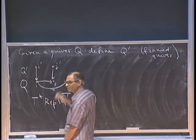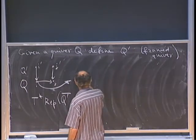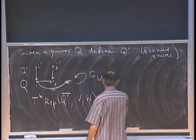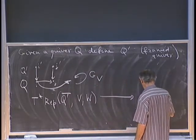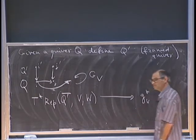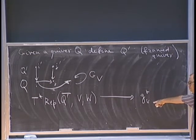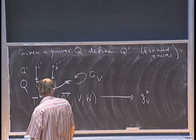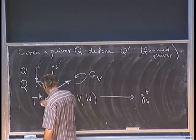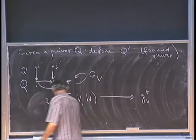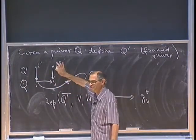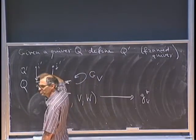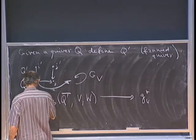The key point is that the group acting on this is only GL_V corresponding to the old vertices — although GL_W sits at the new vertices, you forget about it. So there is a group G sub V acting on it. The moment map goes to the same Lie algebra as before, namely Lie(G sub V) without any W.